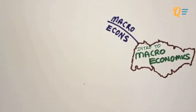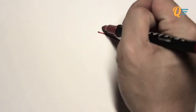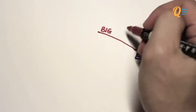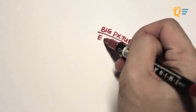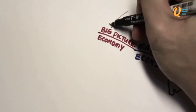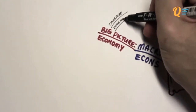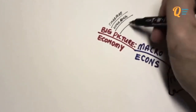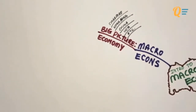Why is this different from micro? In a nutshell, Macroeconomics is looking at the bigger picture of the economy. An economy is also known as a country — for example Singapore, Hong Kong, China, the United States of America, etc.